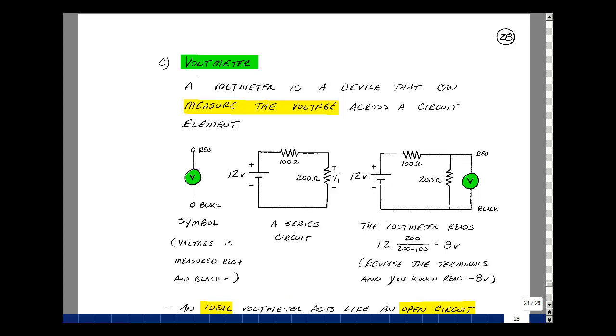The next measurement device is called a voltmeter. A voltmeter is a device that can measure voltage across the circuit element. You can use the same round symbol with a red and black terminal again because there's a polarity, and we'll use the letter V inside the circle to indicate it's a voltmeter.